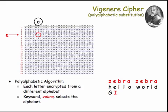For the letter L, we use the B alphabet. We go over to the L, and then come down the column, and we see that it encrypts to M.